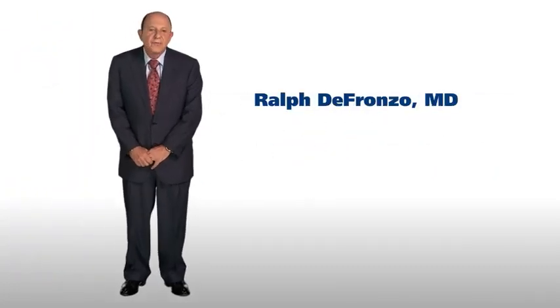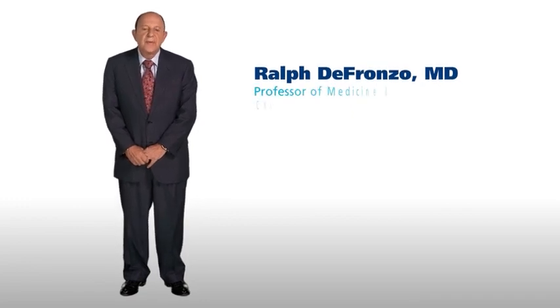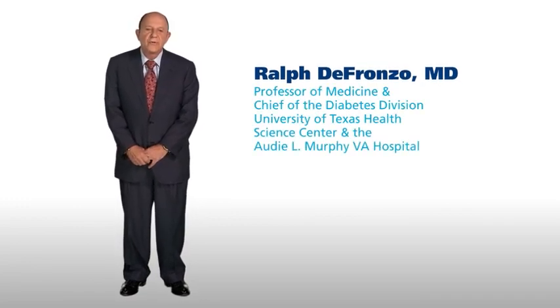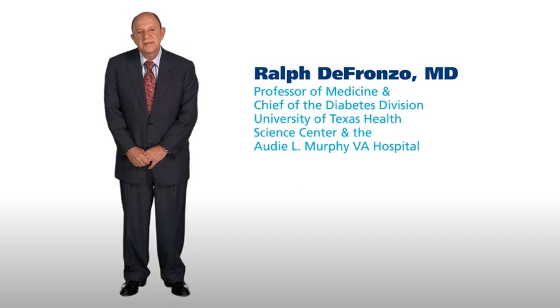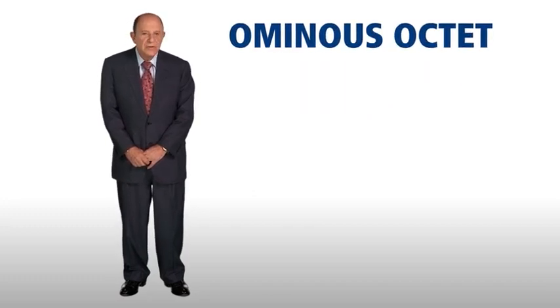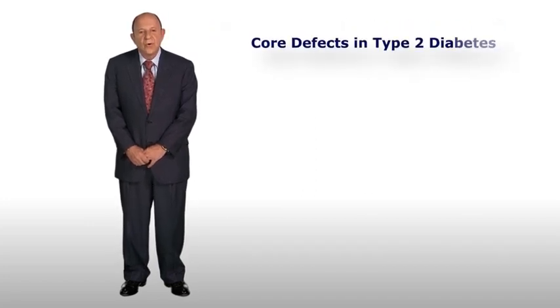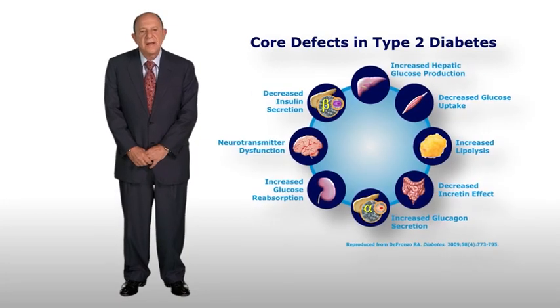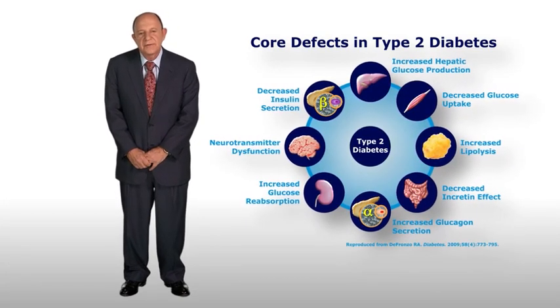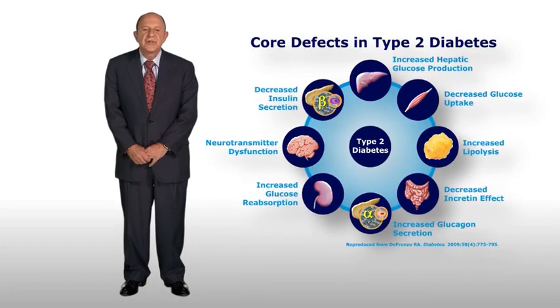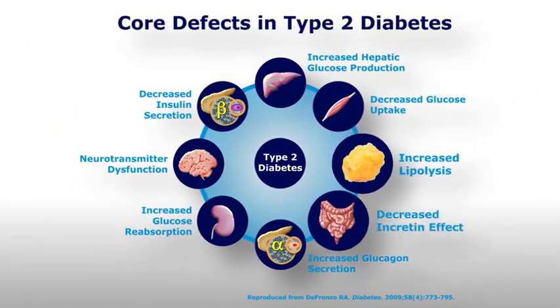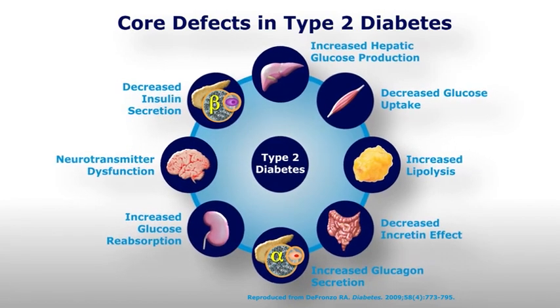Hello, my name is Dr. Ralph DeFranco and I am Professor of Medicine and Chief of the Diabetes Division at the University of Texas Health Science Center in the R.D.L. Murphy VA Hospital in San Antonio, Texas. I also serve as the Deputy Director of the Texas Diabetes Institute. The ominous octet is a phrase that I used in the Banting Lecture at the American Diabetes Association meeting in 2008 to refer to the eight core defects implicated in the pathogenesis of type 2 diabetes mellitus. In this presentation, I will review each of the eight core defects and discuss which ones are affected by GLP-1.